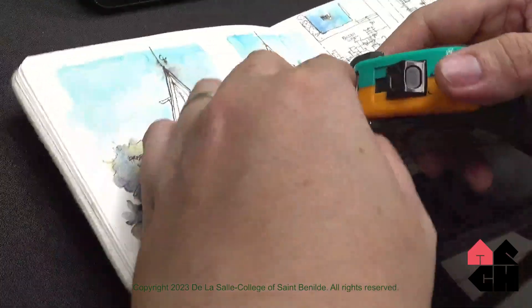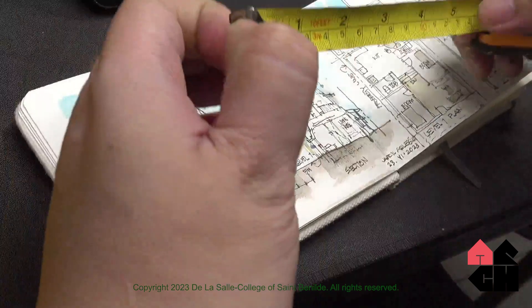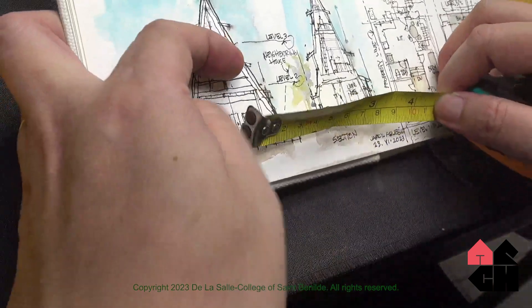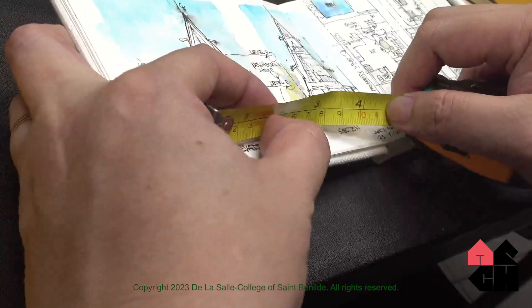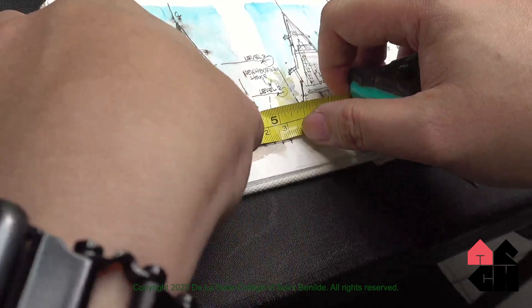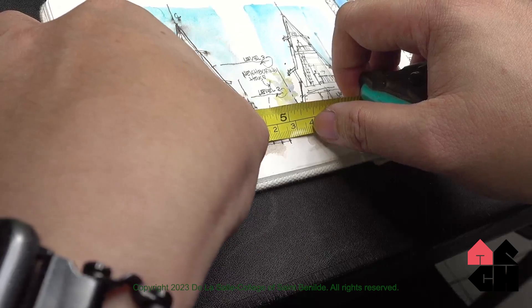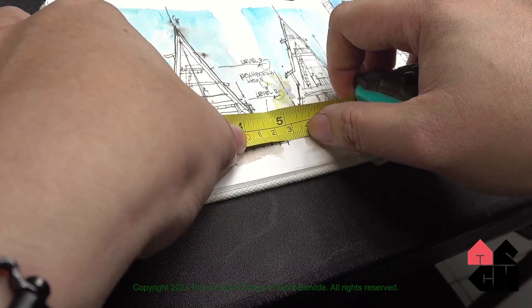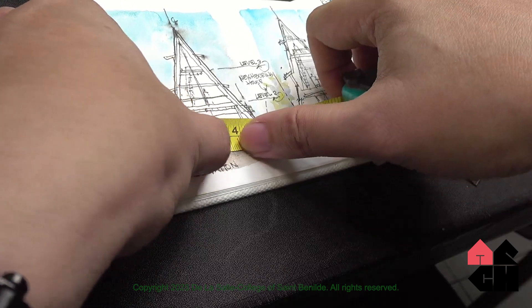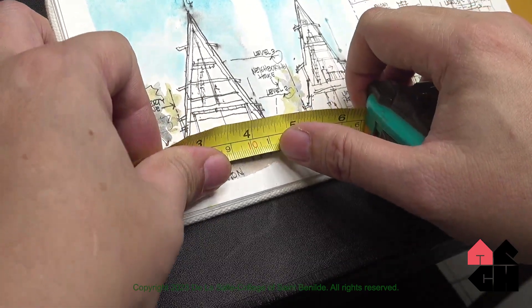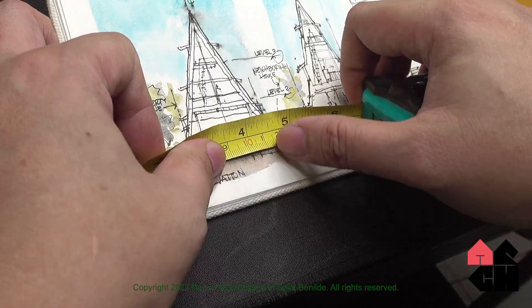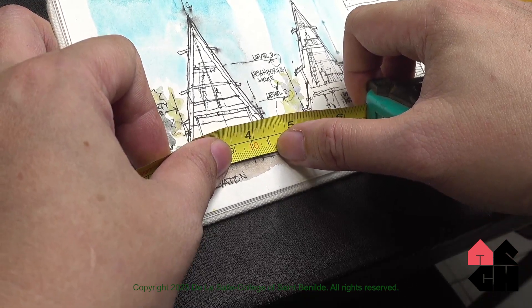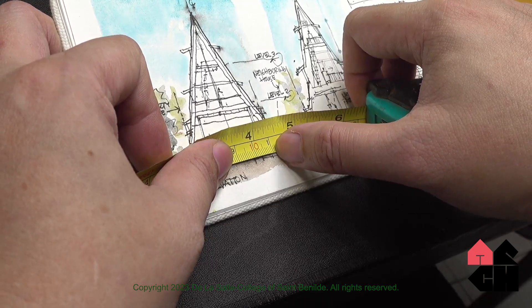I'm going to use the measuring tape rather than the scale ruler. I'm going to measure 5 millimeters, and that would be my 1 meter. That would be my 1 meter in length. If I need 2 meters, then I measure 1 centimeter or 10 millimeters.